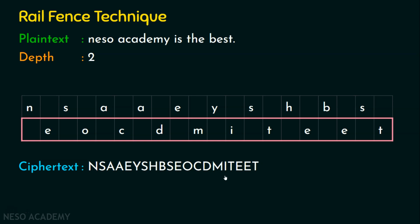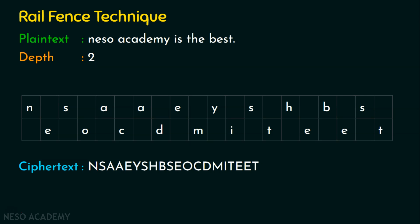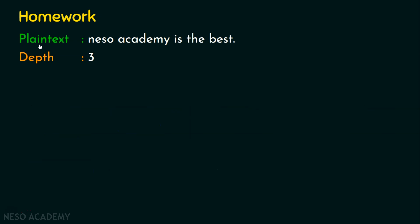We don't know what encryption algorithm was used to generate the ciphertext. Even if we know the algorithm is rail fence, we don't know the depth value used. In this example, we generated the ciphertext with depth value 2, but we could have used 3, 4, or 5. It depends on the depth value agreed upon by the sender and the receiver. For the homework question: encrypt the same plaintext 'Neso Academy is the best' using the rail fence technique but now with depth value 3 instead of 2.